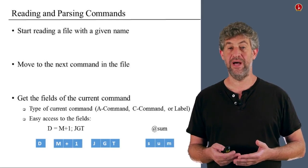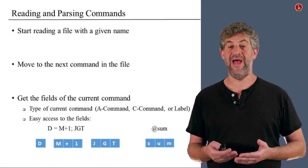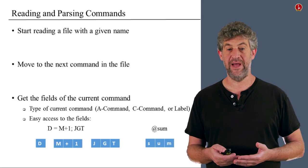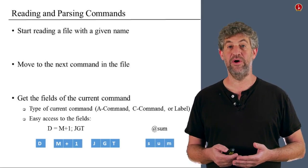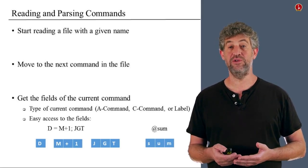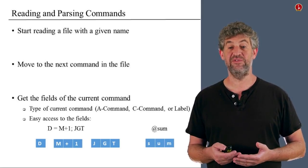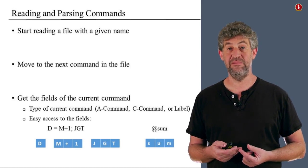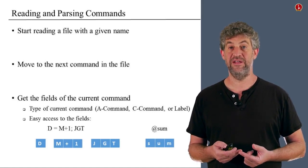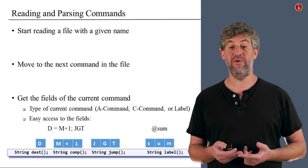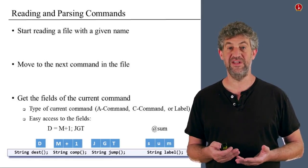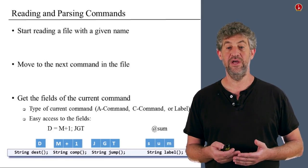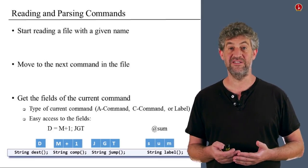For a C command, we'll probably want to give access to the destination part, the computation part, and the jump part. Similarly, for a label or an A command, we'll just want to give access to the actual string, which may be a symbol or an actual number. For example, a set of methods in a Java-like language would probably give you this type of access. The important thing is that you get the pieces of information separately in any way you wish.